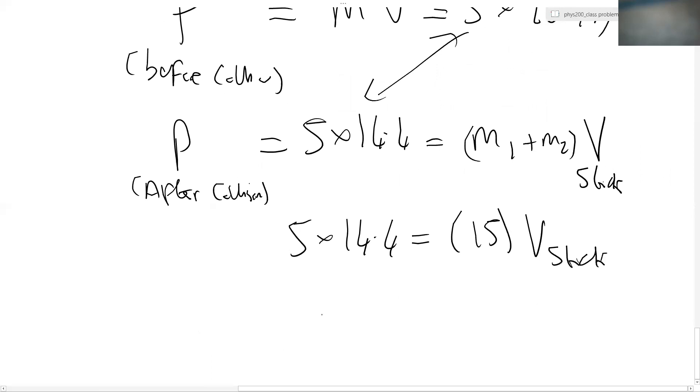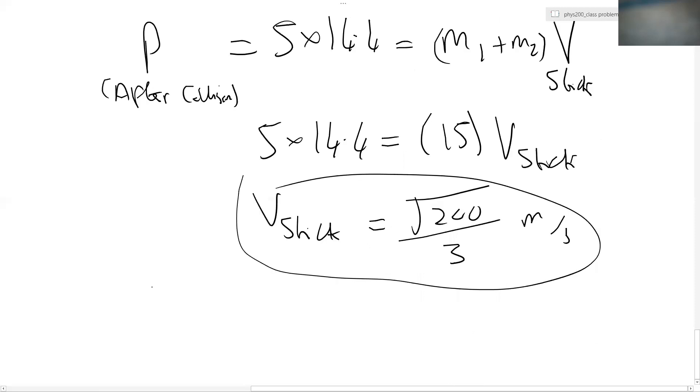So now we have five times by 14.4 equals five plus 10 is 15 times by V stick. And we can now rearrange that to get V stick is equal to, it's going to end up as the square root of 200 divided by three meters per second. So this is the velocity of the stuck together mass, the velocity of the composite mass.